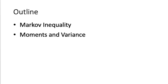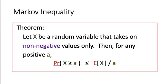Let's start. Markov inequality is stated as follows: suppose X is a random variable that takes on non-negative values only. Then for any positive value a, the probability that X is greater than or equal to a will be less than or equal to the expected value of X divided by a. When we apply Markov inequality we have to be very careful — the random variable X has to take on only non-negative values.